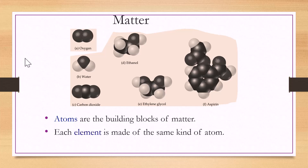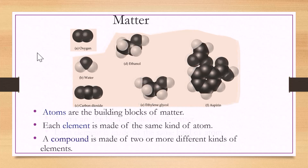Atoms are the building blocks of matter. Each element is made up of the same atom. A compound is made of two or more different kinds of elements. We will get more detail on each category of matter in Chapter 2. For now, I just wanted it to be clear that matter is broken down into more defined categories.